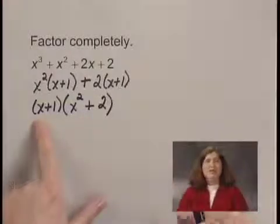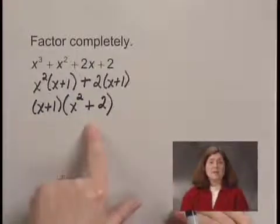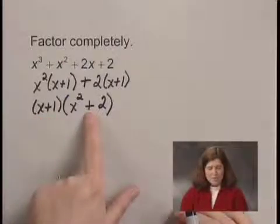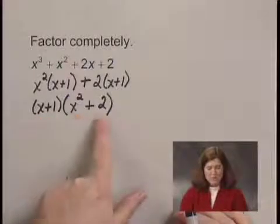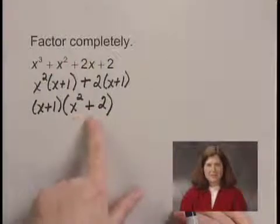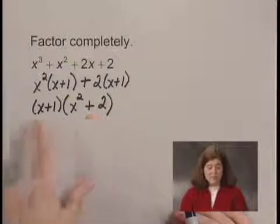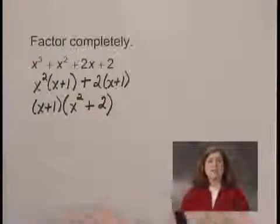Now I need to check each of these factors to see if it can be factored further. I have x plus 1, which cannot be factored. x squared plus 2 is a sum, a binomial that's a sum, and I don't have any formulas for factoring that. So I'm finished. This is the complete factorization of our polynomial.